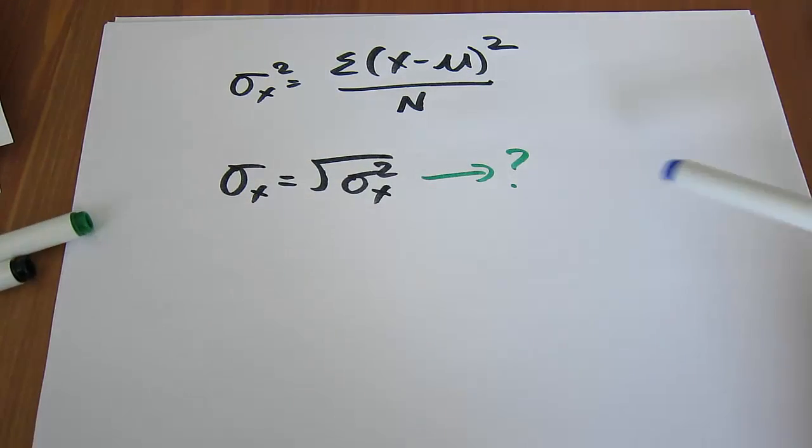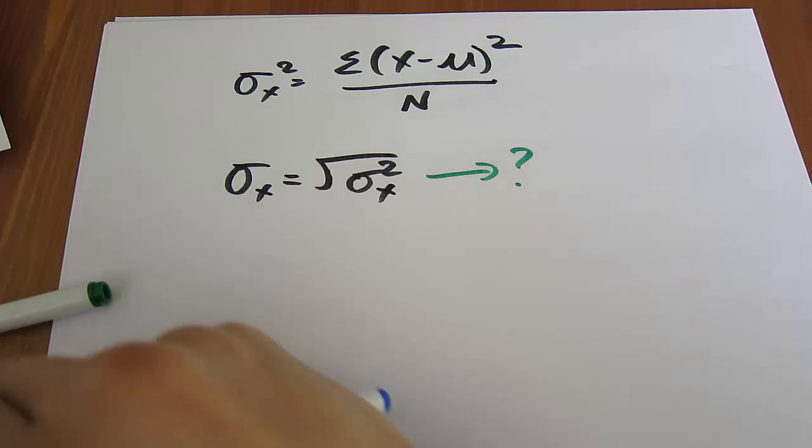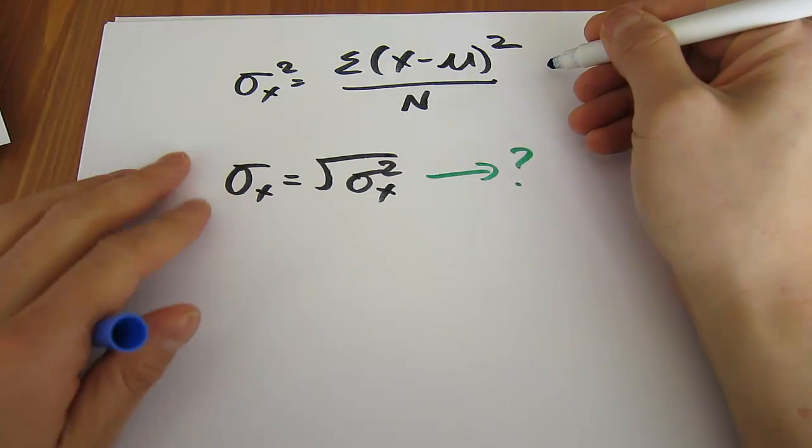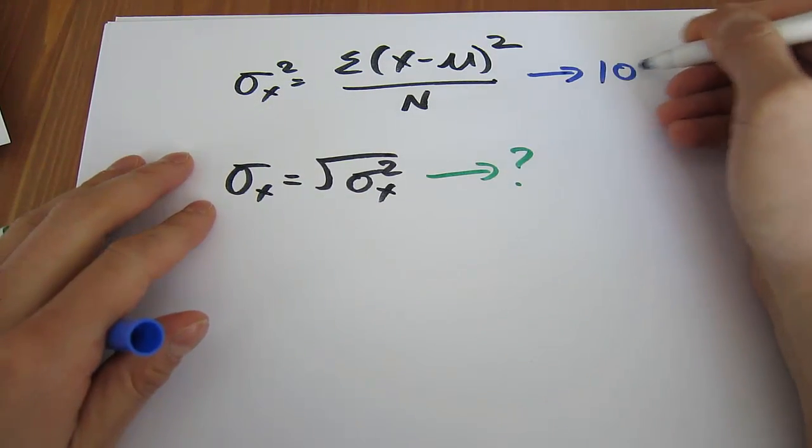Well, imagine if we had a classroom of students and we wanted to calculate the spread of the students' weights—how much variation is there in the students' weights. You use the variance formula and calculate it to be 100.